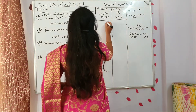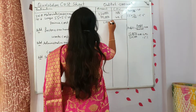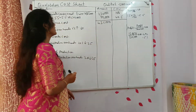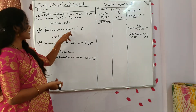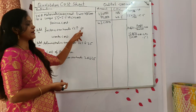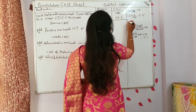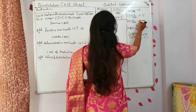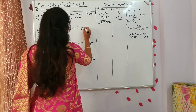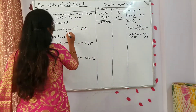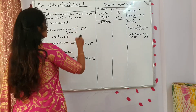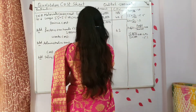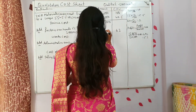What is the total? 4,35,000 — prime cost. Next, factory overheads are increased by 5%. So 60 into 5 by 100 — you will be getting 3 rupees. It is increased, so it will be 60 plus 3 equals 63. 2000 into 63 — how much will you get? 1,26,000.